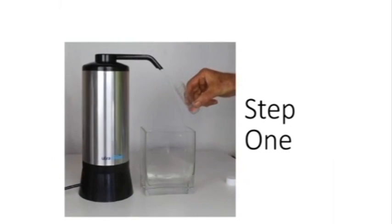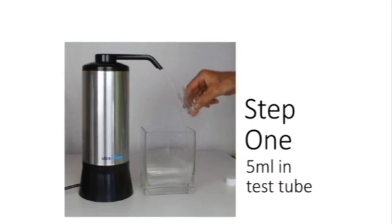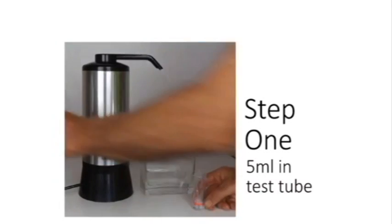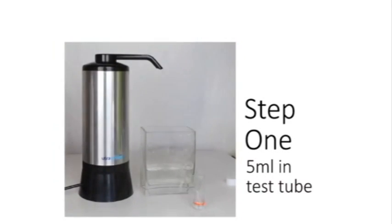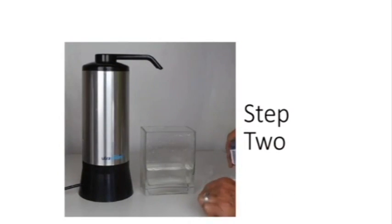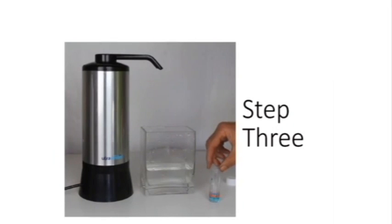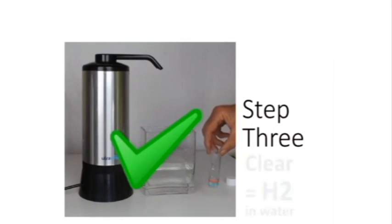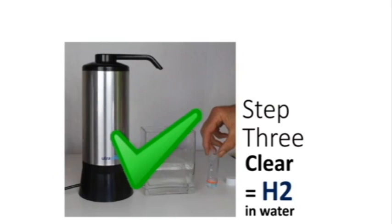The Alkaway AlkaStream. The same step. Step one, five milliliter in the test tube. Step two, add one drop of reagent to the test tube. Step three, lightly agitate the water. And as you can see, the water becomes clear indicating there is molecular hydrogen in the water output by the AlkaStream.